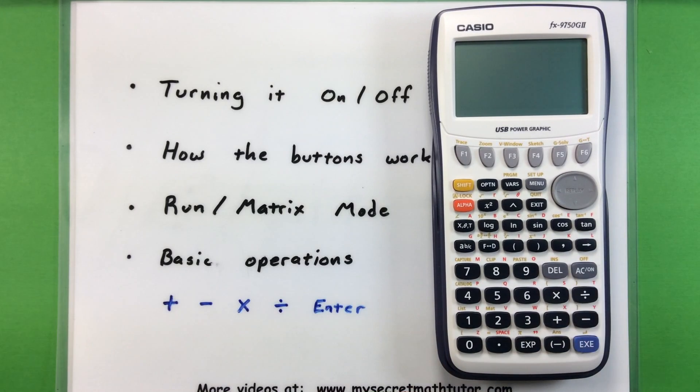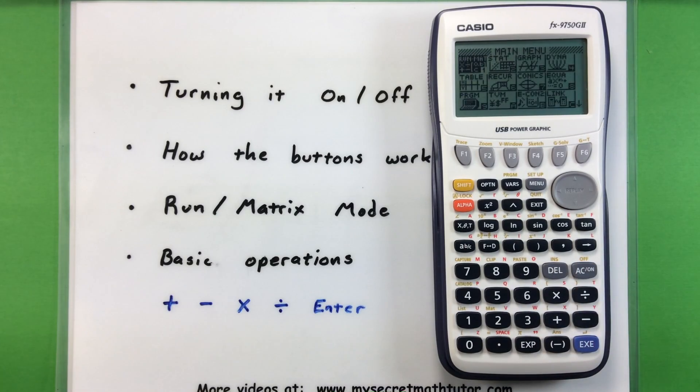A graphing calculator like this is usually pretty intimidating. The first thing you want to know is how do I turn this thing on and off? You'll find the on button for this particular calculator over here on the right side. It says AC slash on. And when you press that, the calculator will turn on.